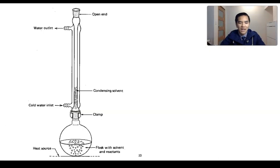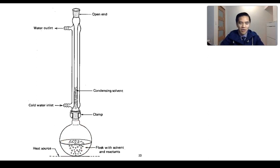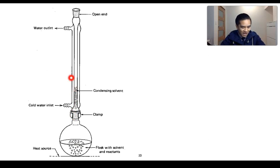To better understand what heating under reflux means, we're going to be looking at this diagram here. Starting from the bottom, we can see there is some type of heat source that's going to heat up our reactants. We have the reactants contained within this flask, as well as a trace of concentrated sulfuric acid and some anti-bumping granules. The heat provided to the flask is going to cause the reactants and products to boil, producing some vapors. To prevent them from escaping into the atmosphere, we have a condenser connected to the top of our flask.